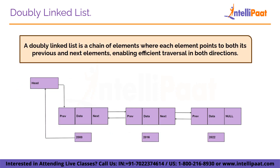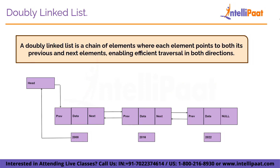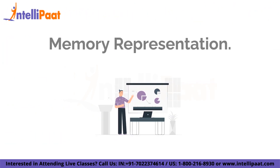A doubly linked list is a chain of elements where each element points to both its previous and next elements, enabling efficient traversal in both directions. Now moving to our next agenda: memory representation in doubly linked list.